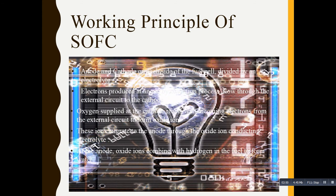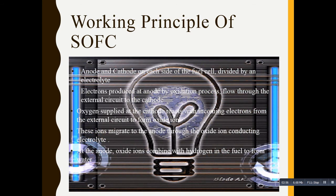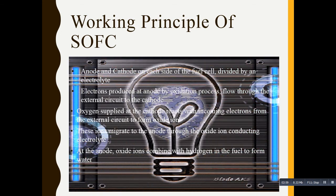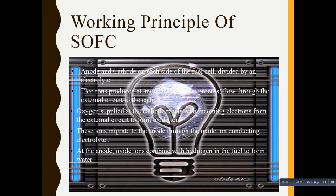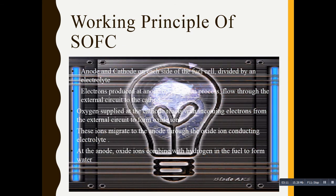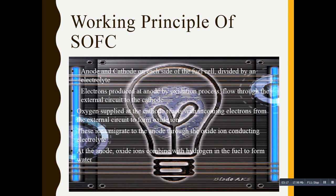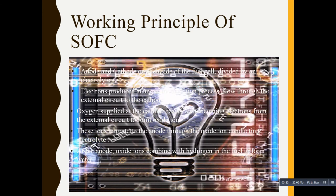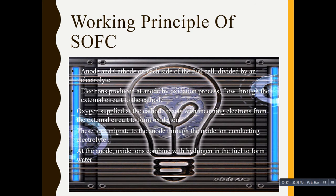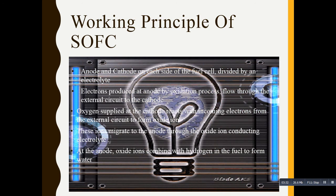In order to resolve this problem, we look at the working principle of the solid oxide fuel cell. At the anode and cathode — each side of the fuel cell — they are divided by the electrolyte. Electrons are produced at the anode by the oxidation process, which flow through the external circuit toward the cathode. Oxygen is supplied toward the cathode side; it reacts with the incoming electrons. These oxide ions then migrate towards the anode side through the connecting electrolyte.